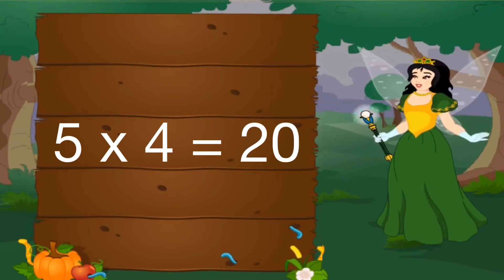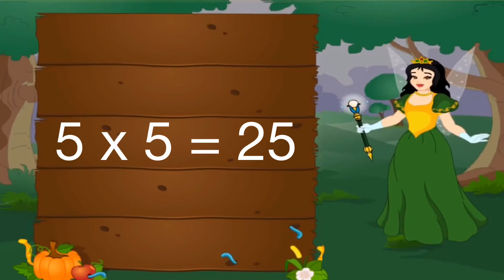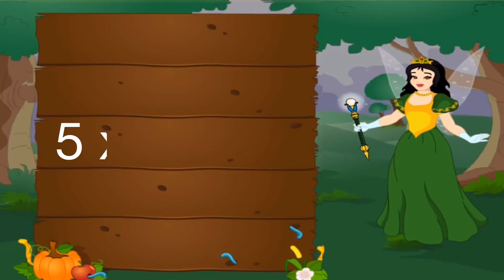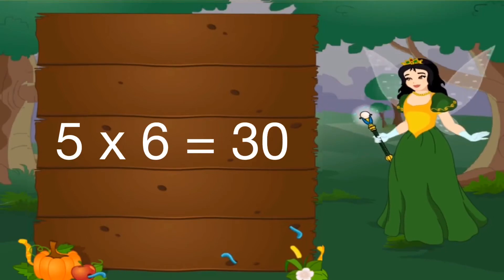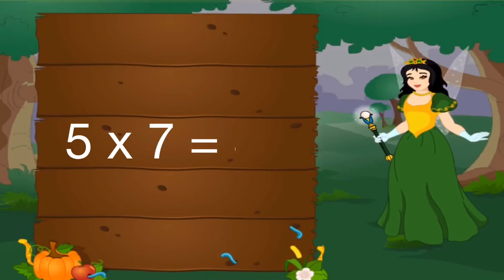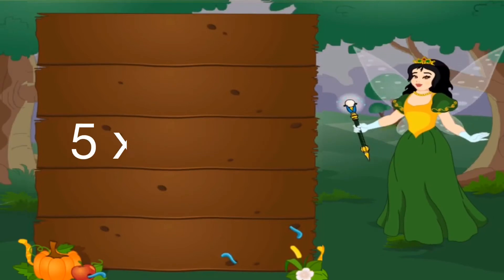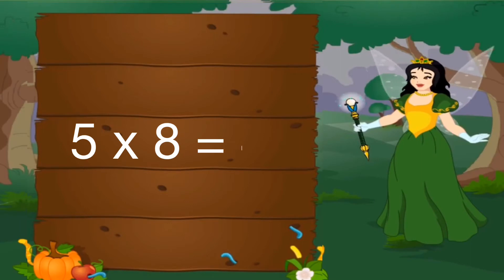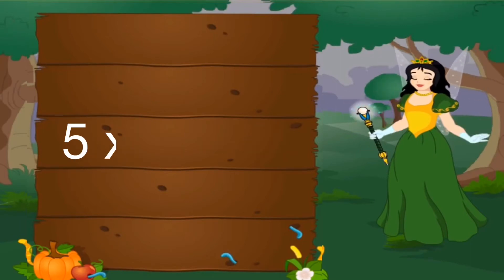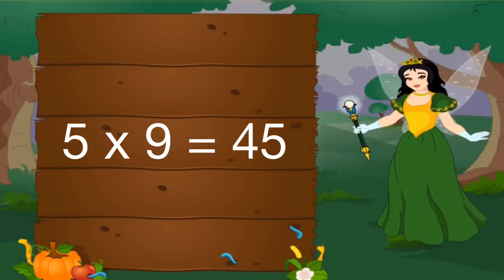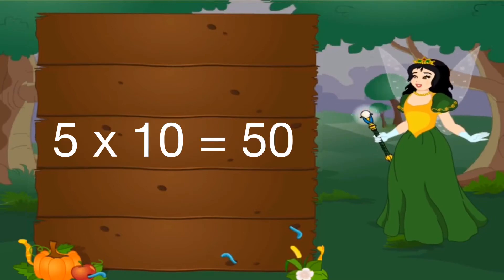5 5's are 25, 5 6's are 30, 5 7's are 35, 5 8's are 40, 5 9's are 45, 5 10's are 50.